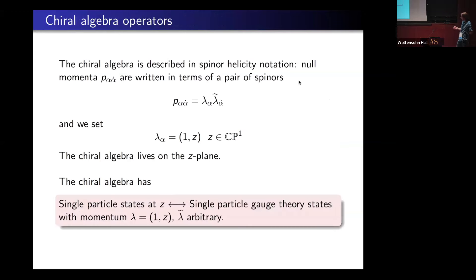Let me try to tell you a little bit about how to build the chiral algebra. Everybody knows the spinor helicity formalism, that a momentum can be written as a product of two spinors, lambda and lambda tilde. The chiral algebra is going to live on a plane, a complex plane or CP1, whose coordinate is given by one of those spinors. We can scale lambda so that it's of the form one comma z, so that then z is a point in CP1, and the chiral algebra lives on this plane.